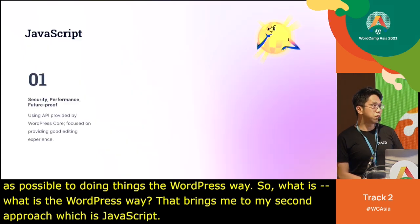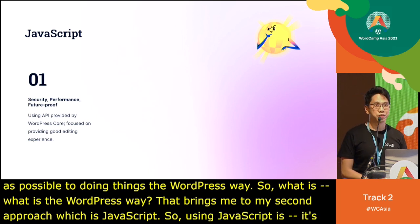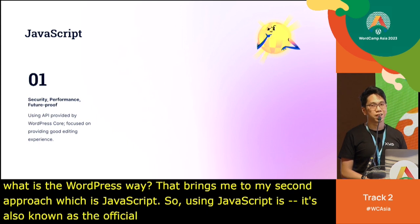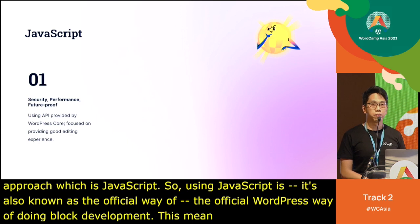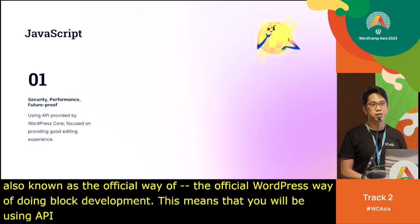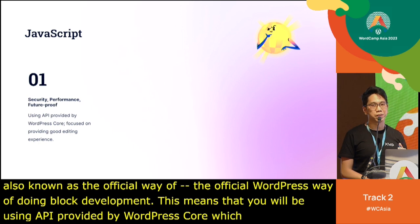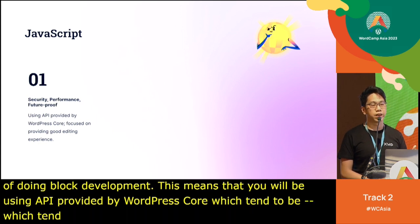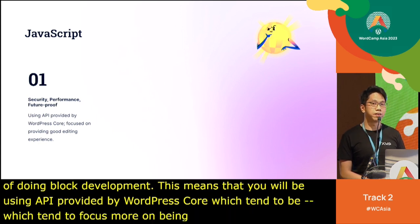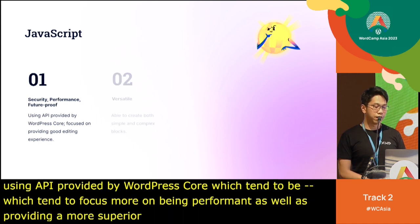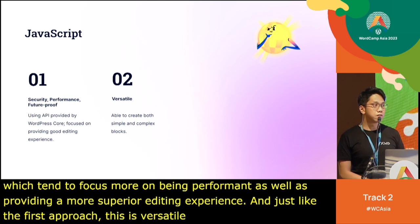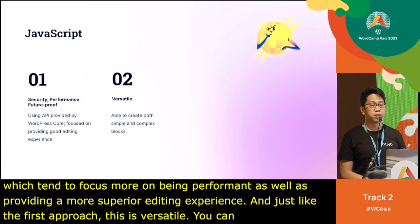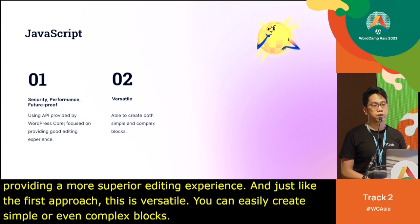Using JavaScript is also known as the official WordPress way of doing block development. This means you will be using APIs provided by WordPress Core, which tends to focus more on performance as well as providing a more superior editing experience. And just like the first approach, this is versatile — you can easily create simple or even complex blocks, and you are not restricted to a specific degree of complexity.